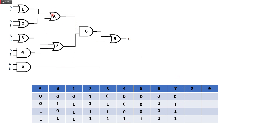Gate 8 is based on gates 6 and 7, and it is an AND gate. So: 0 and 0 is 0, then the remaining rows are all 1s, so outputs are 0, 1, 1, 1. Gate 9 is an OR gate based on gates 5 and 8. So: 0 or 0 is 0, 0 or 1 is 1, 0 or 1 is 1, and 1 or 1 is 1.